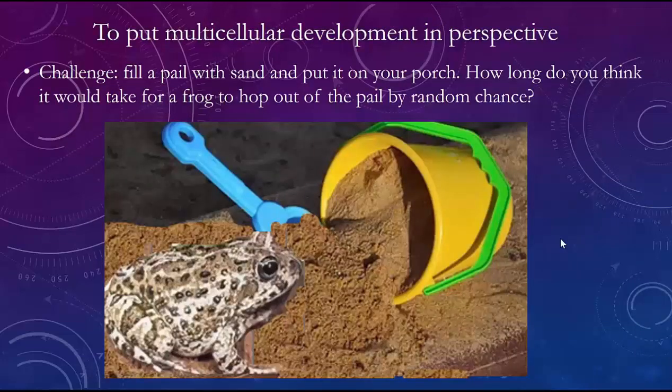To put in perspective what an amazing creation this event is — to go from a single-cell creature to a multicellular animal or plant is really quite amazing. Here's a challenge: go to the sea, fill up a pail with water and sand, put it on your porch, and watch. How long before a frog would hop out of that pail by random chance? I think it's impossible to believe that could happen by random chance alone. It needs the creative touch — and that's exactly the point.